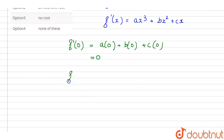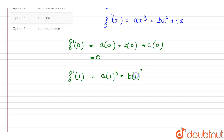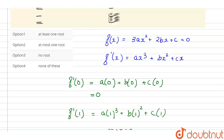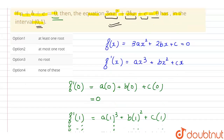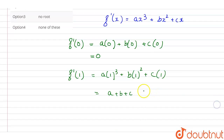Similarly, if we put the value of x as 1, F(1) will be equal to a times 1 cubed plus b times 1 squared plus c times 1, which gives us a plus b plus c. And we are given that a plus b plus c equals 0.